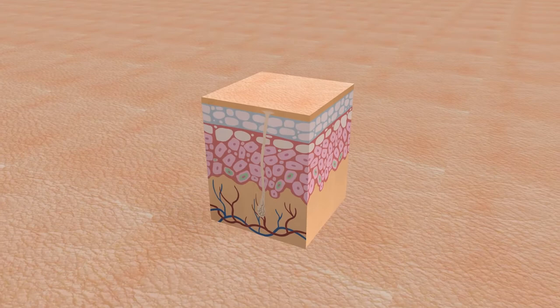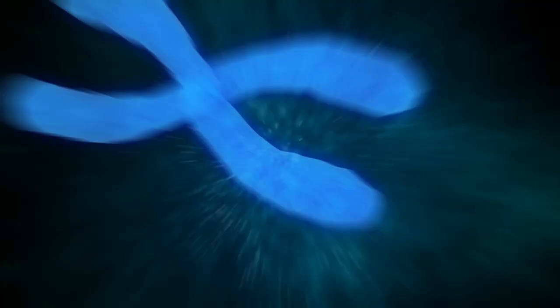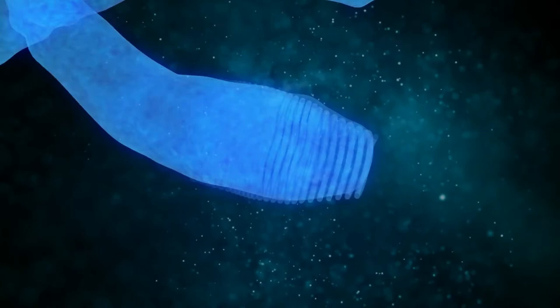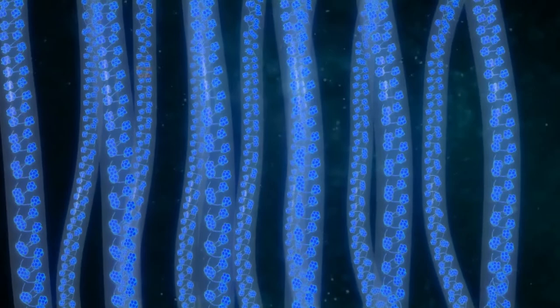Every cell in the human body shares the same DNA from their ancestors, yet the division, expression, and functions of these cells vary significantly. This is the result of a key switch: epigenetics, which regulates the gene expression of each cell without changing the DNA sequence.